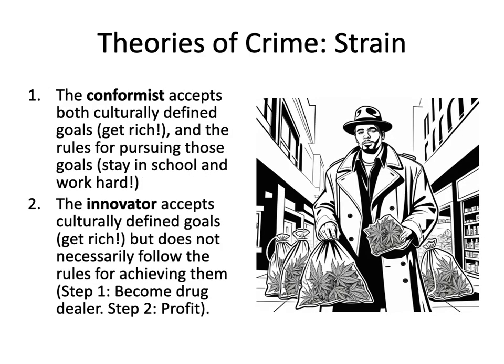Merton argued that there were essentially five different ways an individual could react to a social goal. For example, your society tells you financial success is the key to happiness, respect, and self-worth. Most people fit into the first category: conformists. The conformist accepts both the culturally defined goals — get rich — and the rules for pursuing those goals — stay in school and work hard.